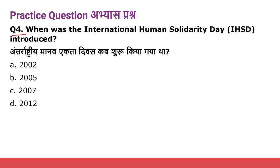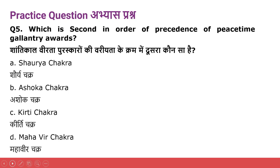Question four: When was the International Human Solidarity Day introduced? Option A: 2002. Option B: 2005. Option C: 2007. Option D: 2012. Question five: Which is second in order of precedence of peacetime gallantry awards? Option A: Shaurya Chakra. Option B: Ashoka Chakra. Option C: Kirti Chakra. Option D: Mahavir Chakra.